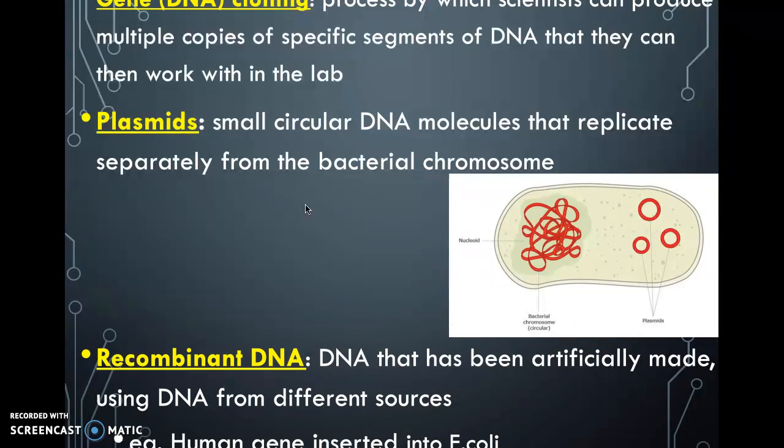The DNA that is artificially made using plasmids and another organism's DNA is called recombinant DNA. Recombinant DNA is the plasmid combined with another piece of DNA, often from another organism.